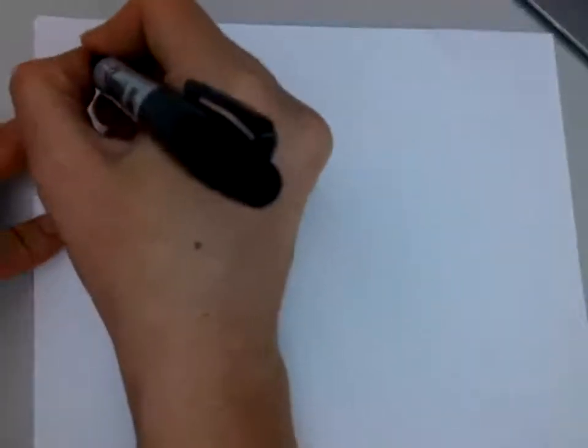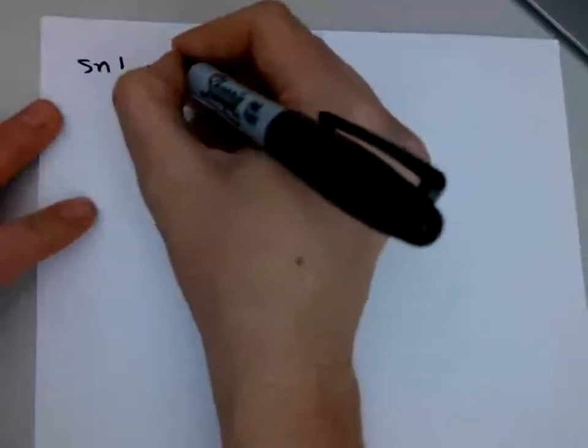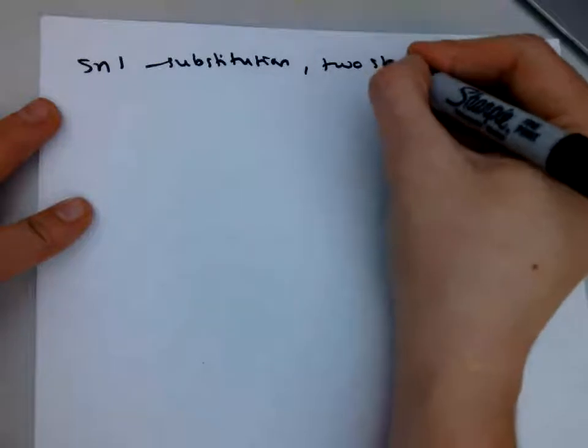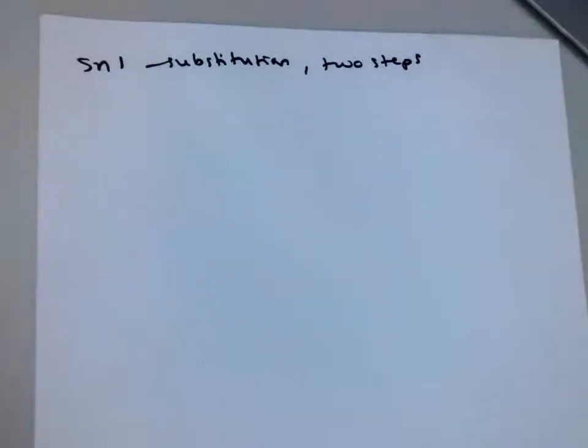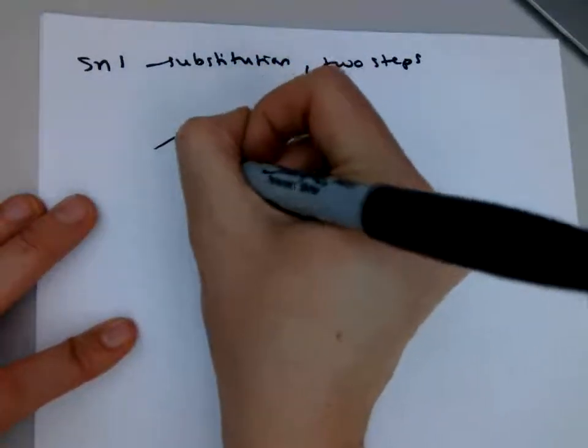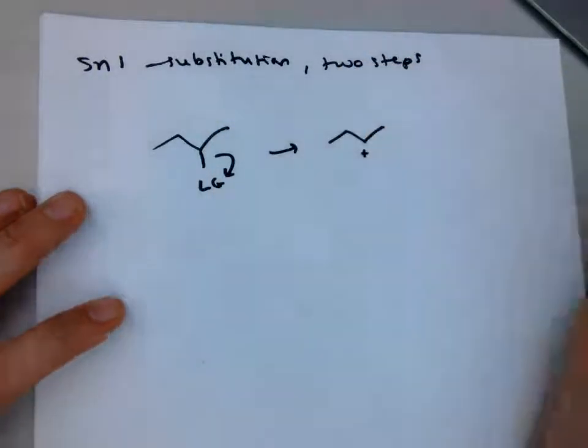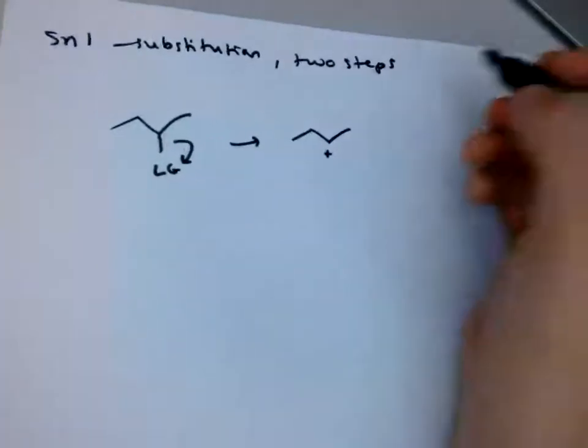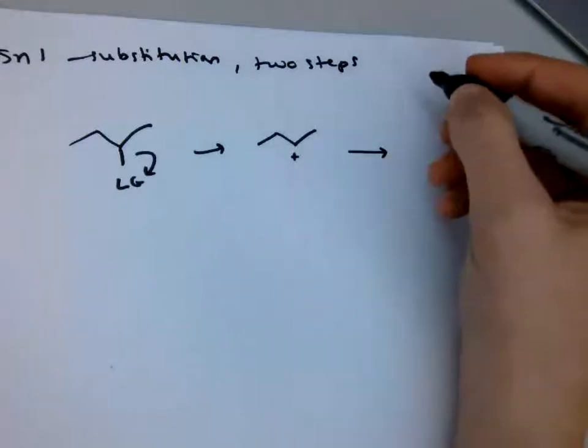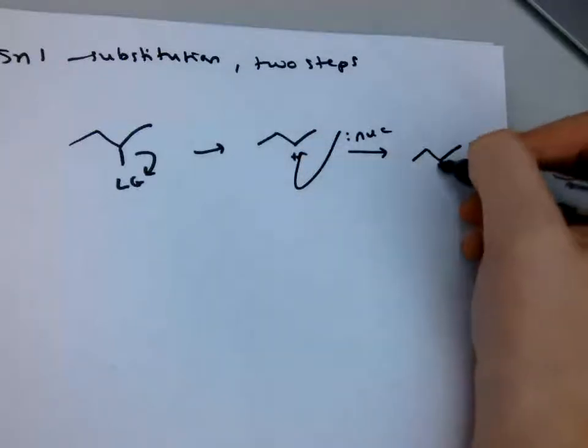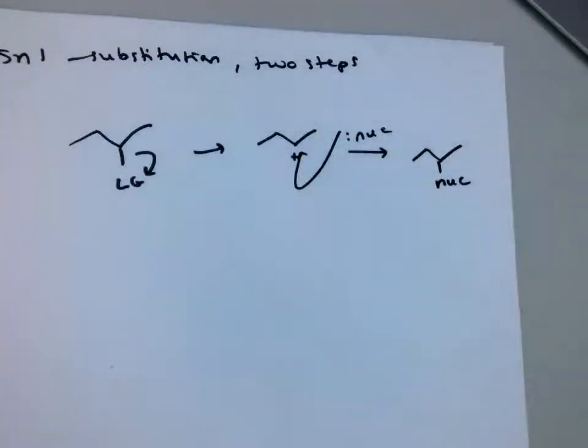Now let's do an overview of an SN1 reaction. So this is a substitution also. And it's actually two steps. Confusing, because this is an SN1. But it's the same thing as last time, where it's based on the rate law, not on the number of steps. So in this, the first step, the leaving group leaves. And that forms a carbocation. You have to be careful of rearrangement in these kinds of reactions, because carbocations will rearrange. We'll talk about that more in later chapters. And then a nucleophile will come in and attack here. And you'll get your final product.